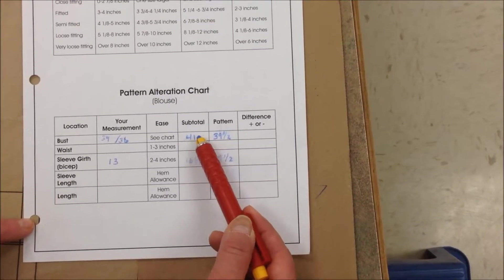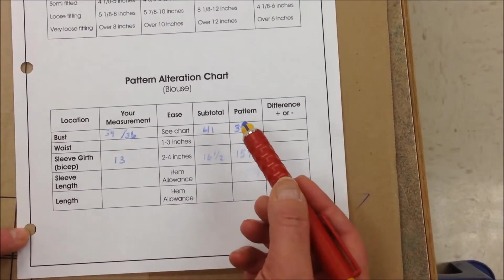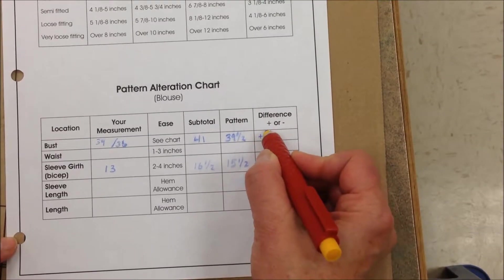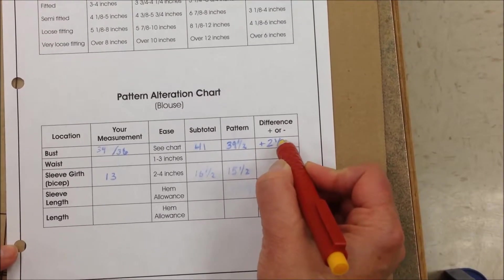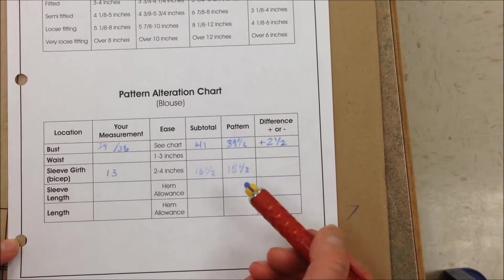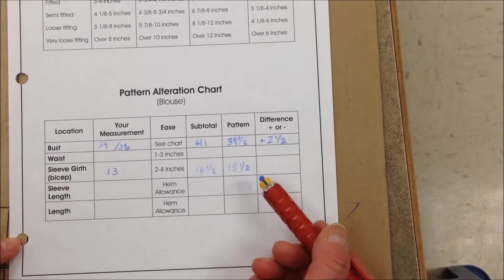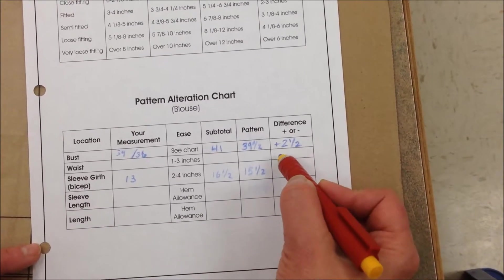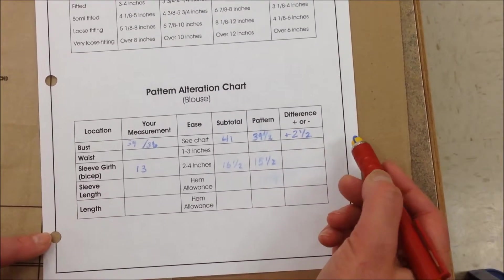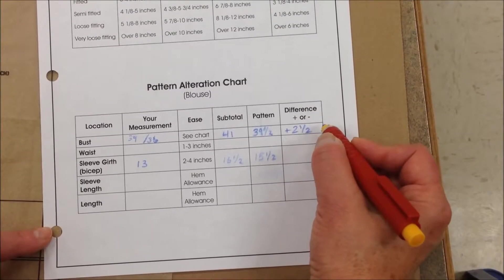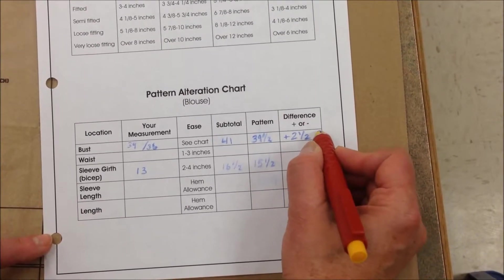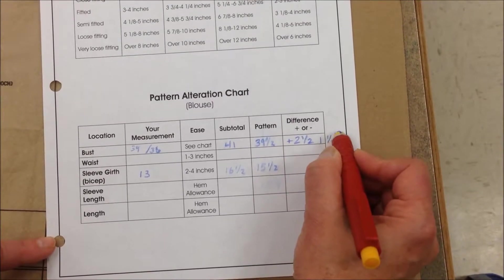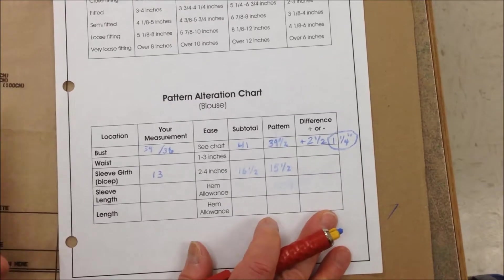So we write that here in the pattern finished garment measurement column and then we look what the difference is. We want 2.5 inches difference. That's how much we want to increase in the bust front or bodice front. But we have a left side and a right side so we actually divide that by half, which gives us 1 1/4. So that is what we are going to increase in our bust area.